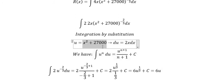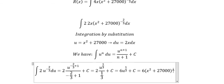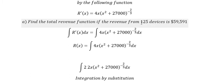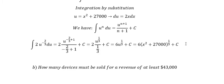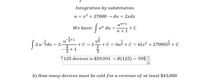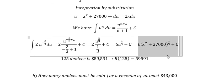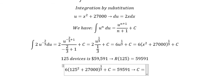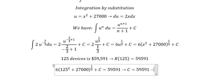Substituting back U. Looking at the conditions, we have R(125) equal to 59,591. If we put 125 in here, we can find the value of C, the constant. C equals this number minus this number.